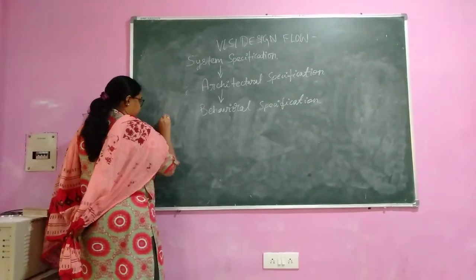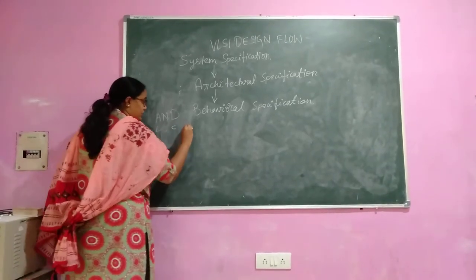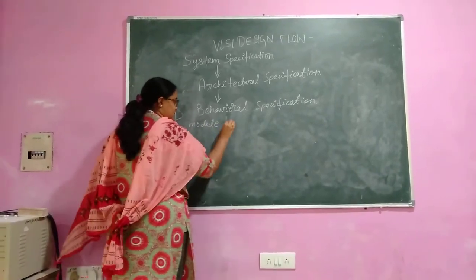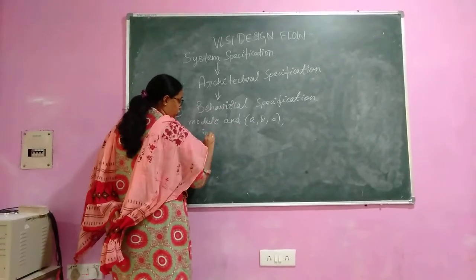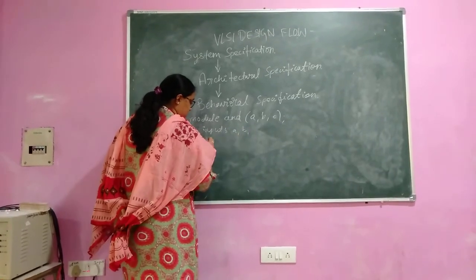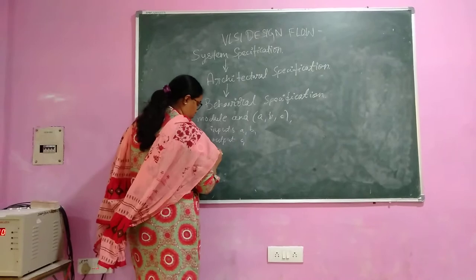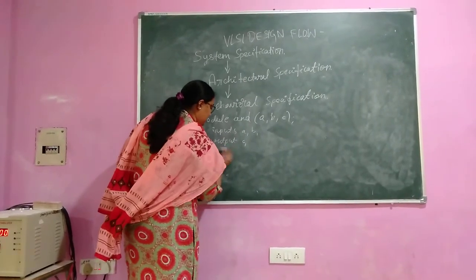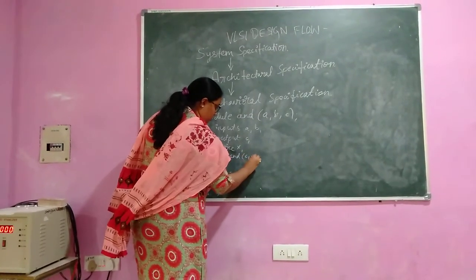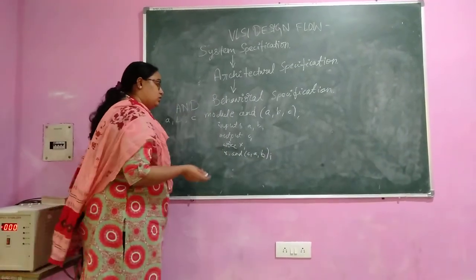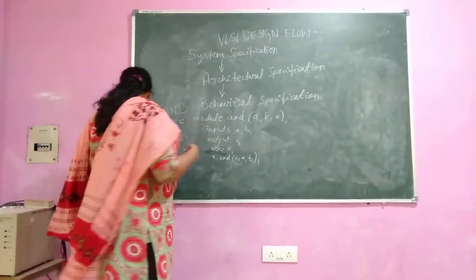The most commonly used hardware description language nowadays is Verilog. For example, for an AND gate with inputs a and b and output c, we write it as a module. We name the module 'and', then specify the inputs and outputs, and then specify how they will work by writing that c equals a AND b. This is how Verilog is written for each module, and the behavioral specification also shows how the modules are connected.